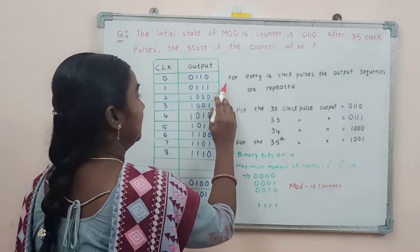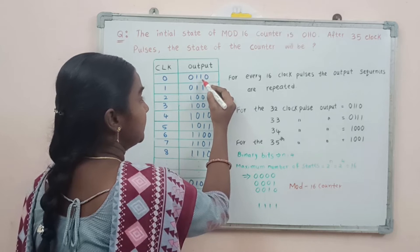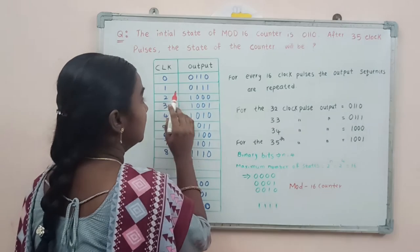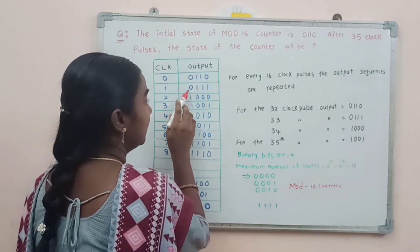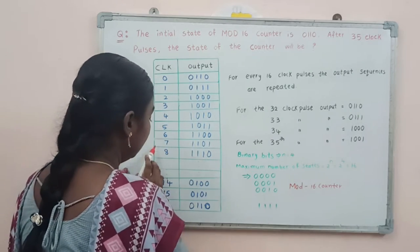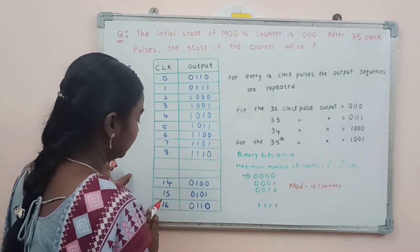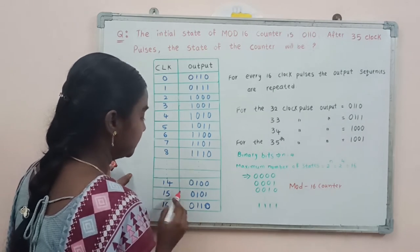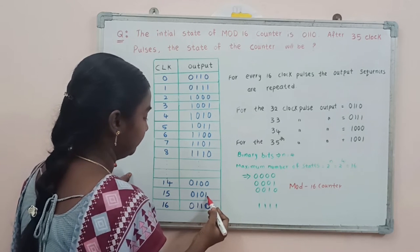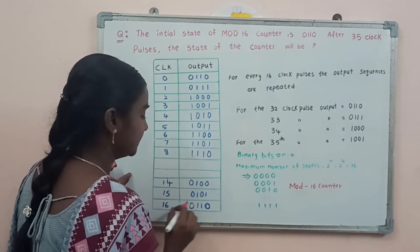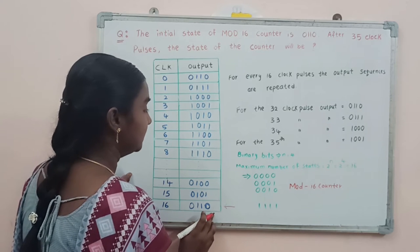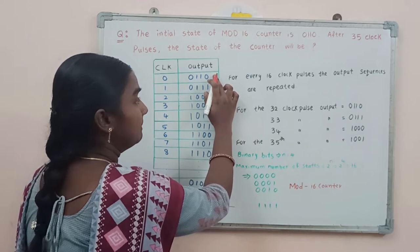In this question, before giving the clock pulse, the initial state is 0110. By applying the first clock pulse, the next sequence we get is 0111. Continuing through all clock pulses, after applying the 15th clock pulse the counting sequence is 0101, and after applying the 16th clock pulse we get back to 0110, the same initial state.